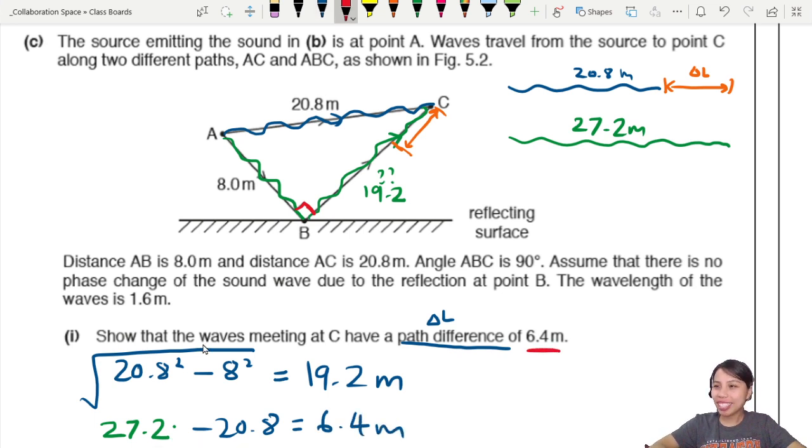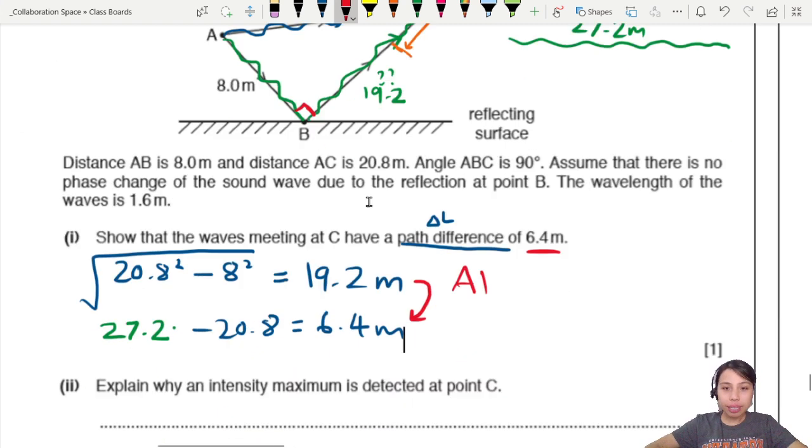So in total, what is the path difference? This one travels 8 and then 19.2. So in total, 19.2 plus 8, that's 27.2 meters traveled by this fellow. Path difference, you minus both. So now you can take 27.2 minus 20.8, and that will give you 6.4 meters. Proven? Yes. Correct. Very good. So this is one mark if you did, you minus path difference, find Pythagoras and minus.